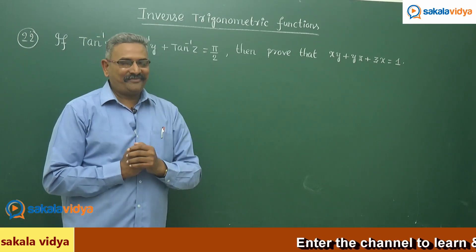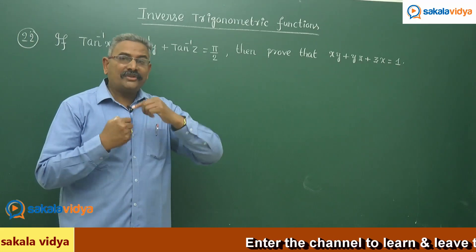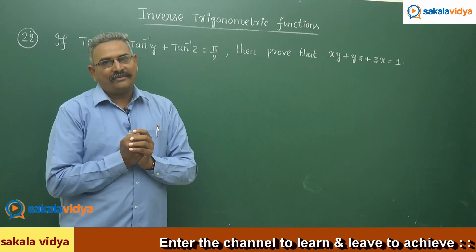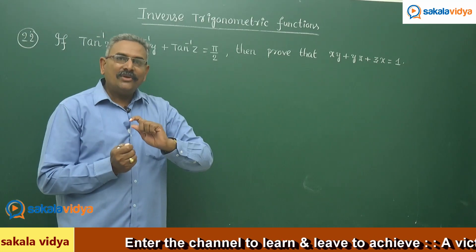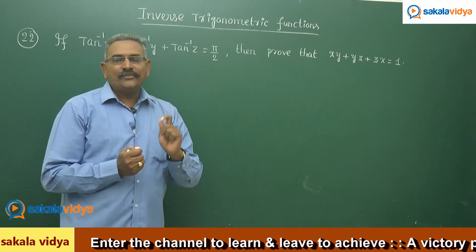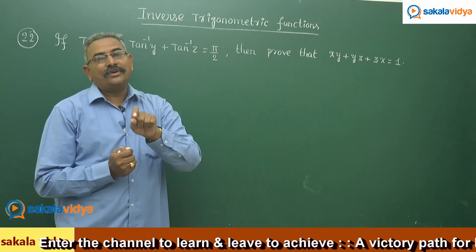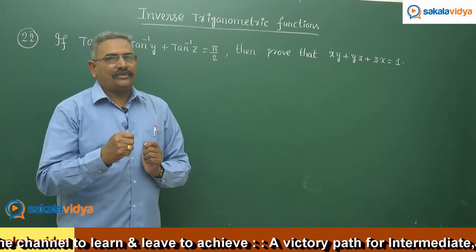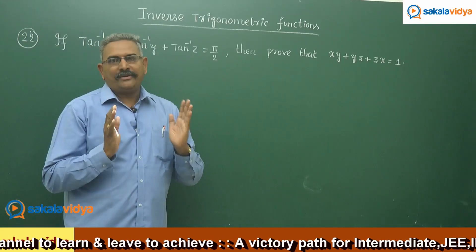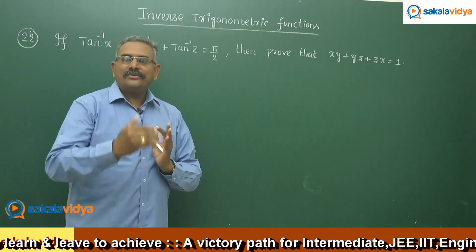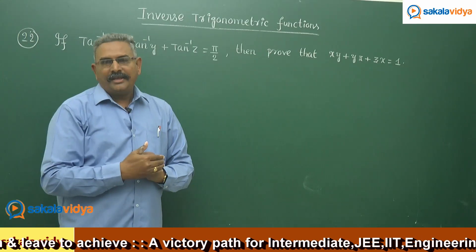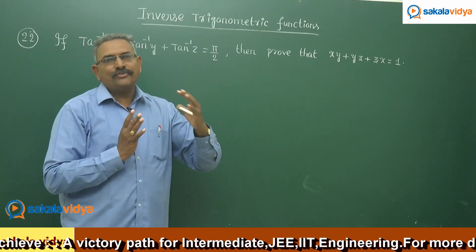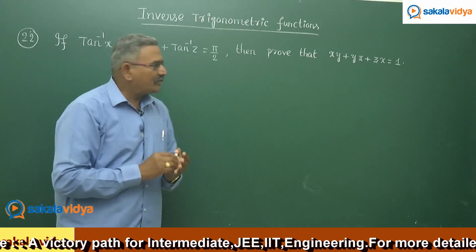You might be recollecting — this problem we have already solved in the compound angle chapter. So it is very easy to solve. We need to prove sigma tan a tan b equals 1, or tan a tan b plus tan b tan c plus tan c tan a equals 1. Before going to that, we have to convert in terms of tan a, tan b, tan c, which is why we assume the values first.